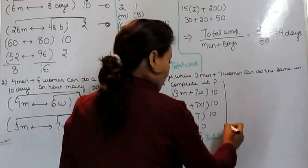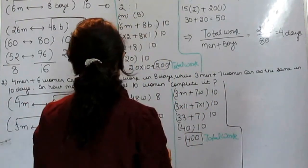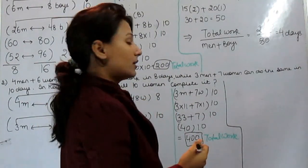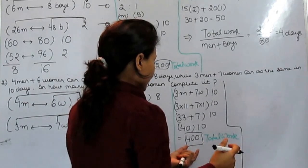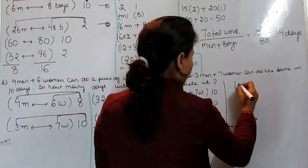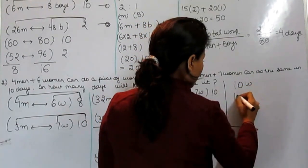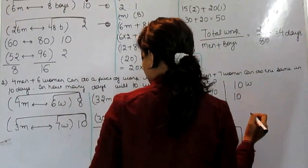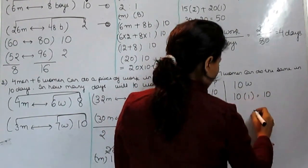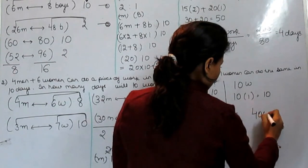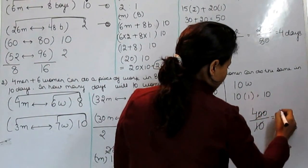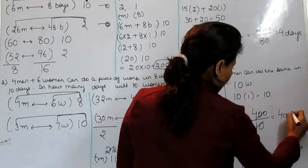But what we have to get? We have to get in how many days will 10 women complete it. We have to get the time taken by 10 women. 10 women, what is the ratio of women? That is 1. So this is 10. What is the total work? Total work is 400 divided by 10 women. So what is the answer? Answer is 40 days.